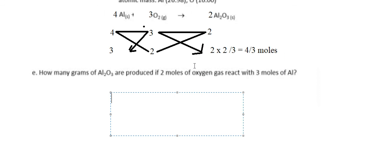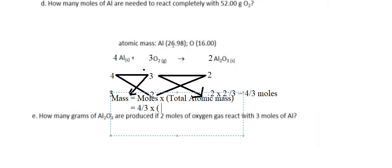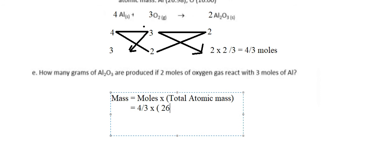Using the formula mass equals moles multiplied by total atomic mass, we have 4/3 moles of aluminum oxide. The total atomic mass of Al₂O₃ is 26.98 × 2 plus 16 × 3. So mass equals 4/3 × (26.98 × 2 + 16 × 3), which gives approximately 135.95 grams.